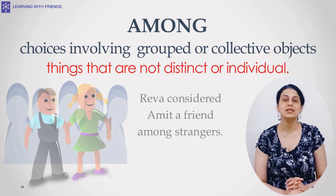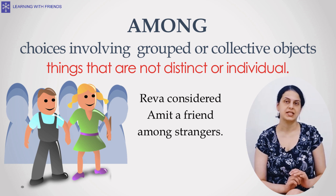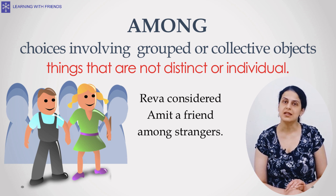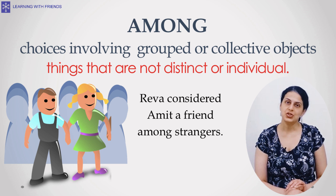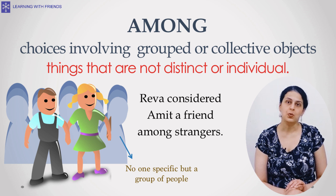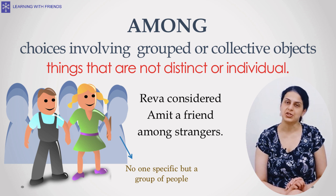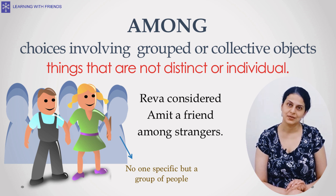One more example: 'Reva considered Amit a friend among strangers.' Strangers refers to no one specific, but a group or collection of people.